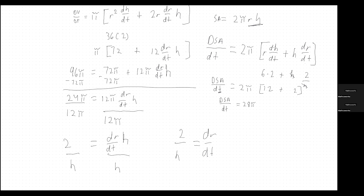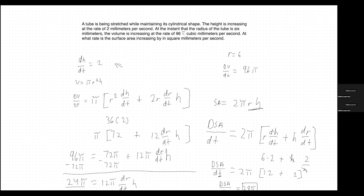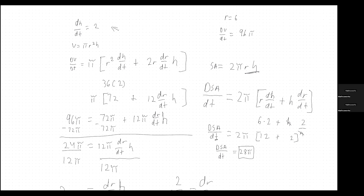And that's our final answer. The 28π means that the surface area is increasing at a rate of 28π square millimeters per second — that's the derivative in relation to time, which is in seconds. Thank you all for watching, and I hope to see you in the next video.